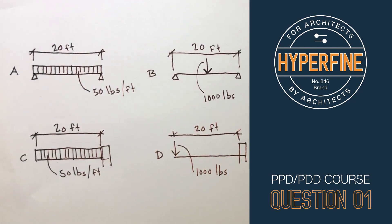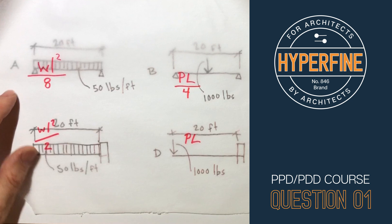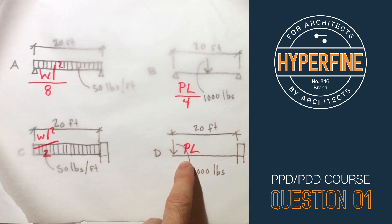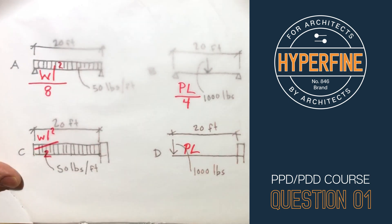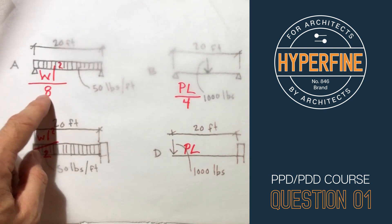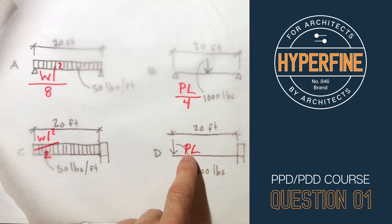If we want to look at that mathematically, the max moment for the uniformly distributed load is WL squared over 8, whereas the max moment for the cantilever with the point at the end is just PL. Looking at the formulas you can see this one's gonna be the lowest because it's got the greatest denominator and this one really has no denominator. It's basically the load times the weight.